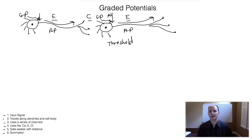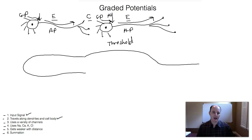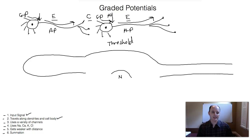I want to focus on this idea of a graded potential. Graded potentials are these input signals that travel along the dendrites and the cell body. Let's take a look at a larger dendrite — we have our cell body, our axon, the nucleus, and the axon hillock location. This is our dendrite and this is our cell body, so we know where we are anatomically.